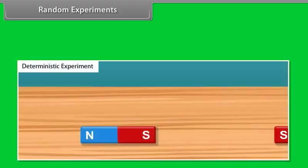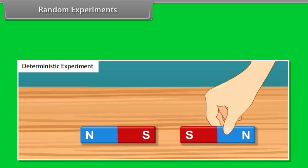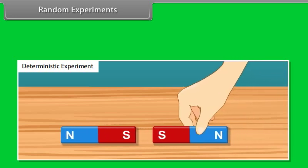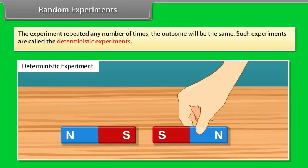Random experiments. In our day-to-day life, we perform experiments like bringing two like poles of magnets near to each other. We know that the above experiment may be repeated any number of times and the outcome will be the same. Such experiments are called deterministic experiments.